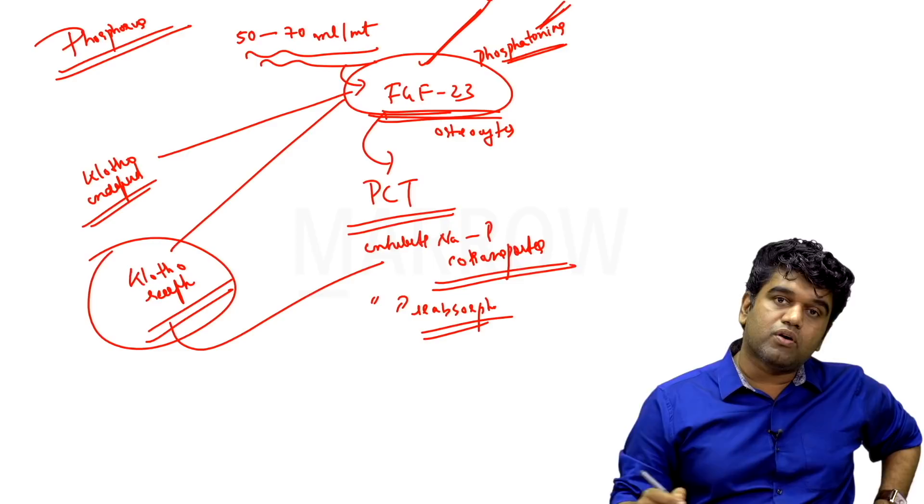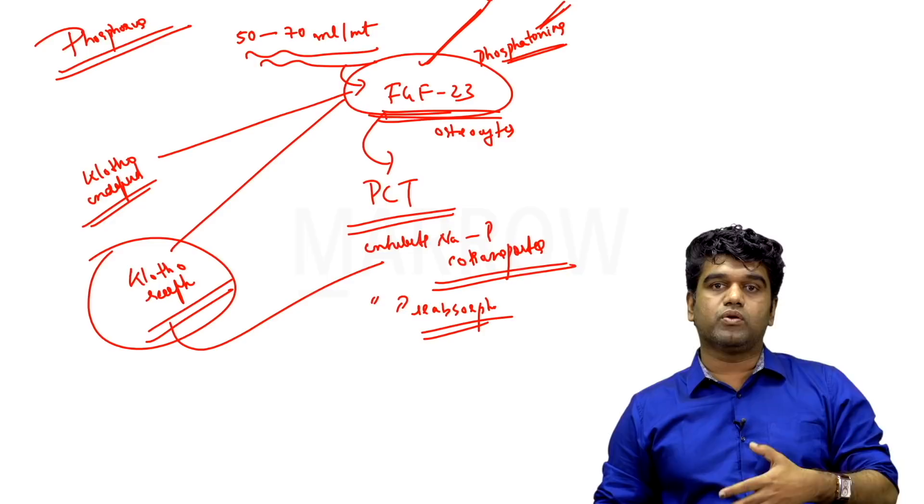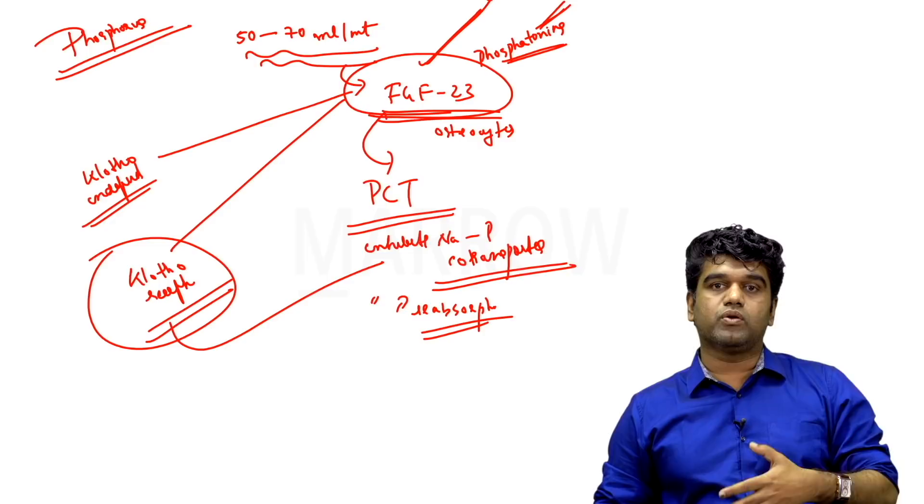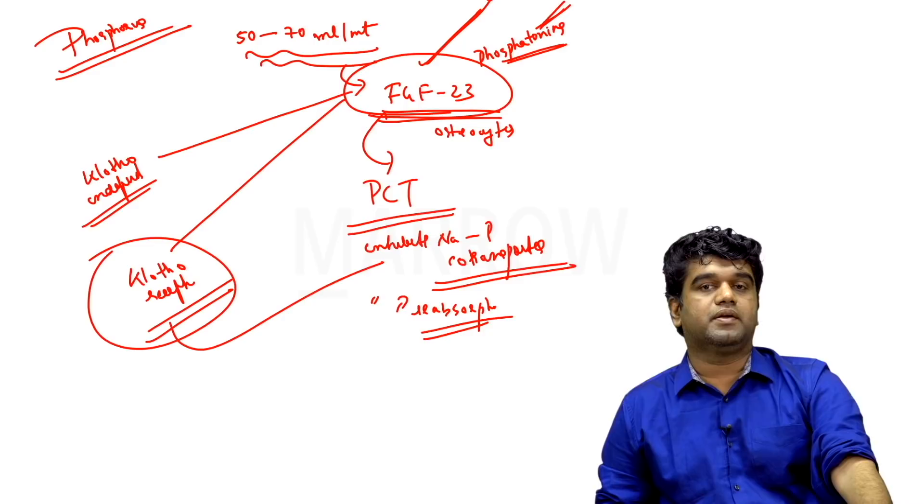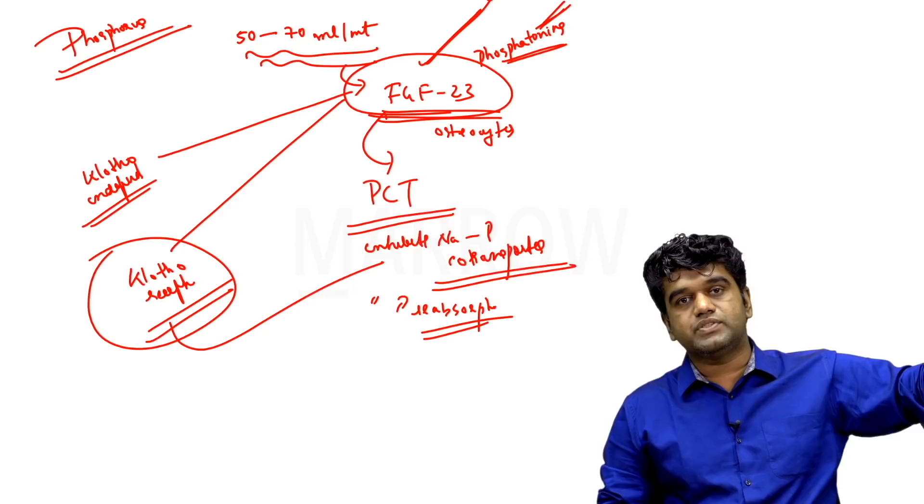FGF-23 was thought to be the hero at one point in time, but unfortunately now is being considered as a villain. FGF-23 in 2010, 2011, 2012 was actually considered as a hero kind of molecule because it was able to excrete out phosphorus consistently, thus keep phosphorus well within normal limits, and thus prevent this whole issue of calcification that could have happened if phosphorus had been high.